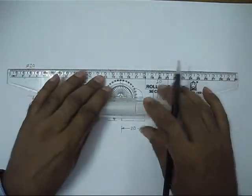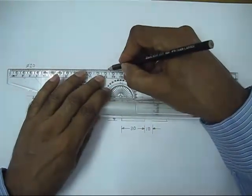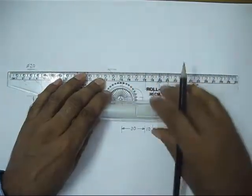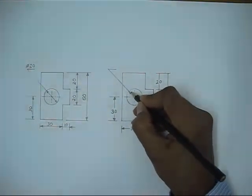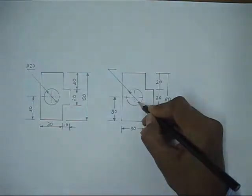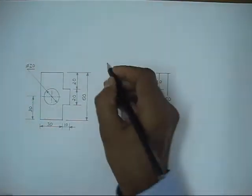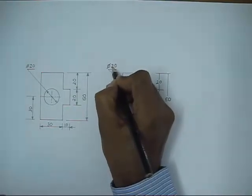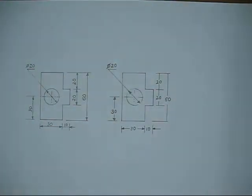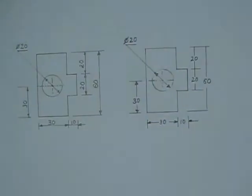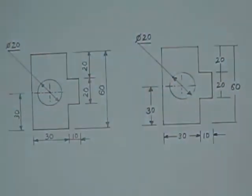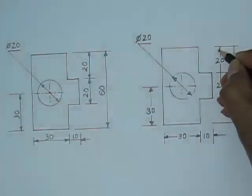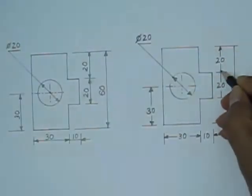For the diameter of the hole, again we will use the leader line. In this case, the leader line ends with a horizontal line, so the number is always written horizontally — meaning we can read from the bottom of the drawing sheet. These are the two types of placing systems for dimensions: the first one is the aligned system on the left side, and the second one is the unidirectional system on the right side.